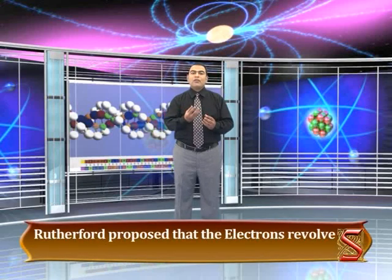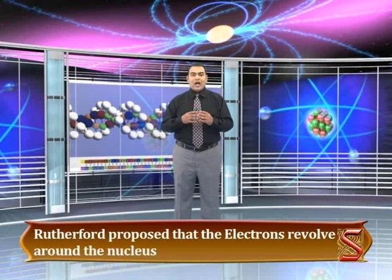Rutherford proposed that the electrons revolve around the nucleus. However, according to the electromagnetic theory, such circulations would radiate energy continuously. If this is so, then electrons will gradually lose energy by circulating in circles of decreasing radii. After some time, they will fall into the nucleus and the atom will collapse.